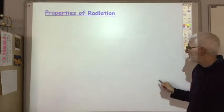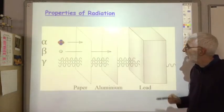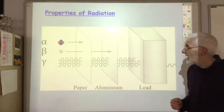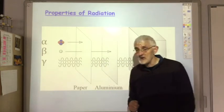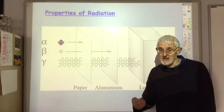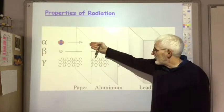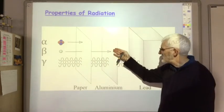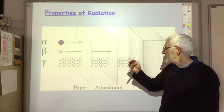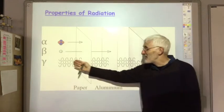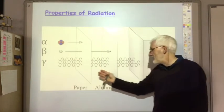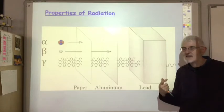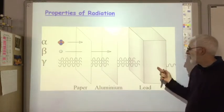Another important property of radiation is penetrating power. Alphas have a very low penetrating power — they are stopped by about 10 centimetres of air or by just a thin piece of paper. Beta particles can go through paper but a thin sheet of metal would stop them. Gamma rays are very penetrating — they go through paper and thin sheets of metal, and you need a very thick block of lead, which is a very dense metal, or concrete, to stop all the gamma rays.